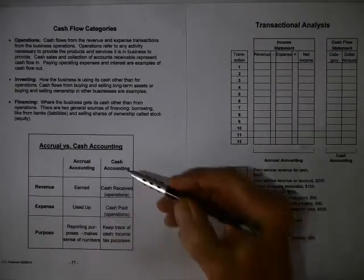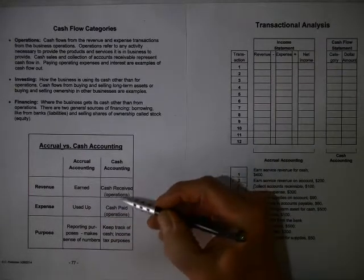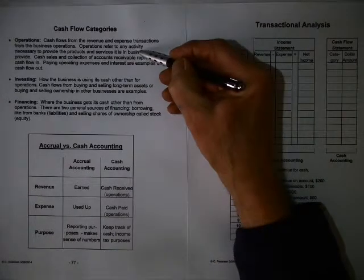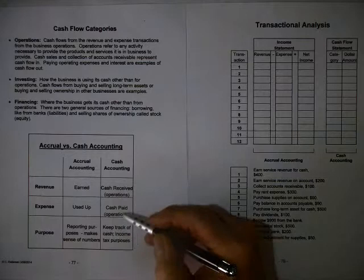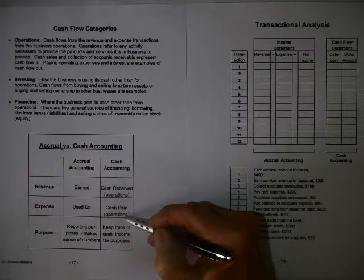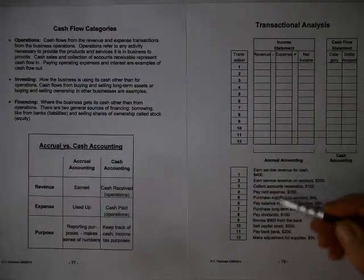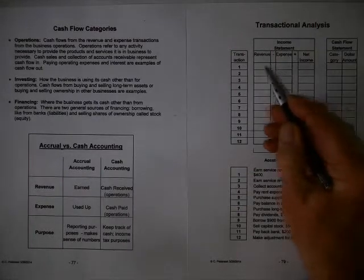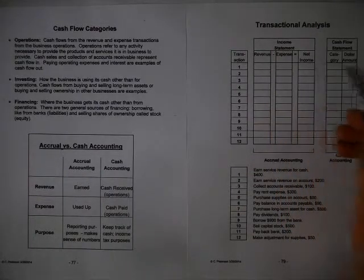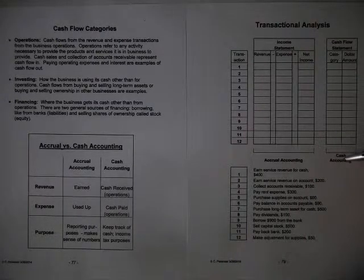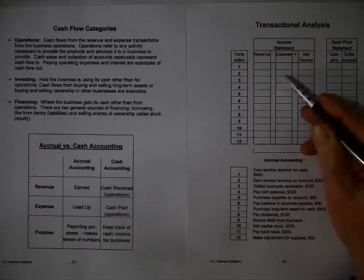Now cash accounting as we just said is revenue is defined as cash received from the operations of the business and the expenses cash paid from the operations of the business. Now I want to contrast the two using a series of transactions here. What I'm going to do is I'm going to show their impact on the income statement and the cash flow statement so that we can see this portion of the information here is based on the cash accounting system. This is on the accruals accounting system.